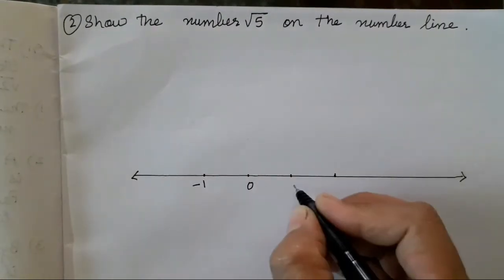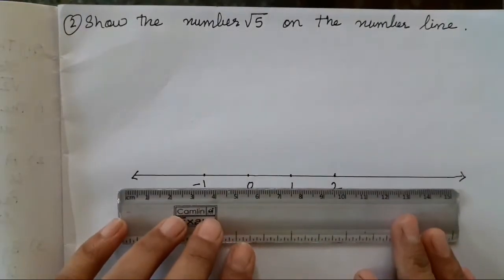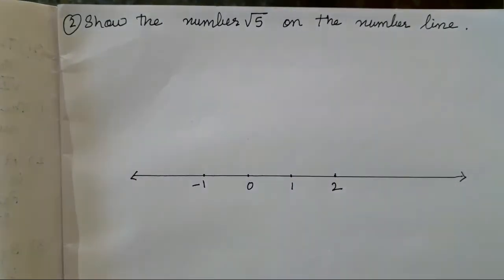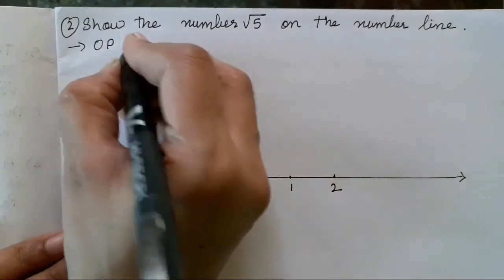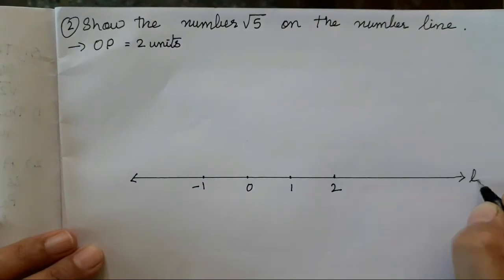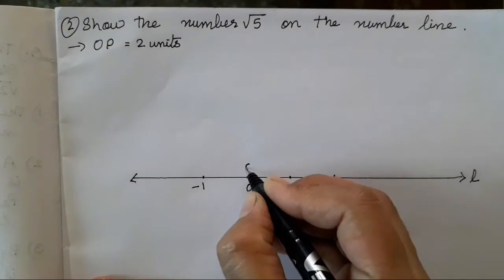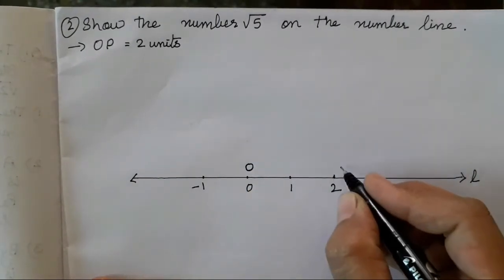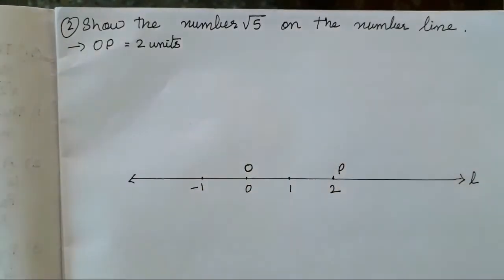We have to write O and P — OP is 2 units. We have to mark this line as L. O is going to be our origin and P is going to be 2. That is what we have written — distance is 2 units.